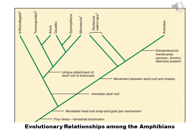Synapomorphic characters for lower taxonomic groups are not indicated in this cladogram. Synapomorphic characters are characteristics which are present in an ancestral species and shared exclusively, in a modified form, by its evolutionary descendants.